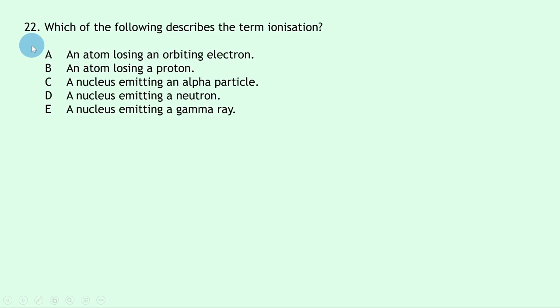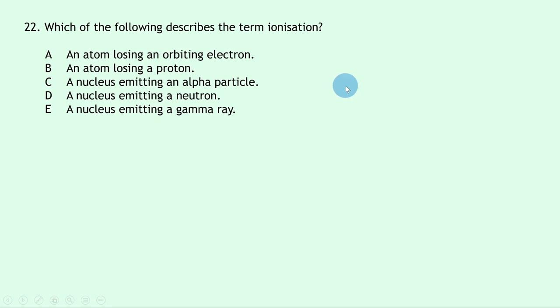Question 22: which describes ionization? Ionization refers to the addition or removal of an electron from an atom. The correct option is A — an atom losing an orbiting electron.